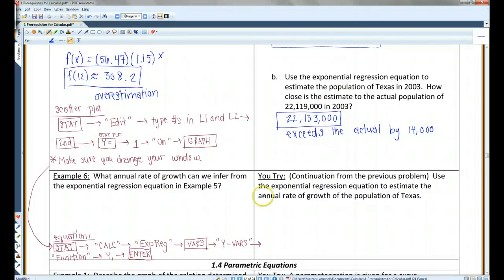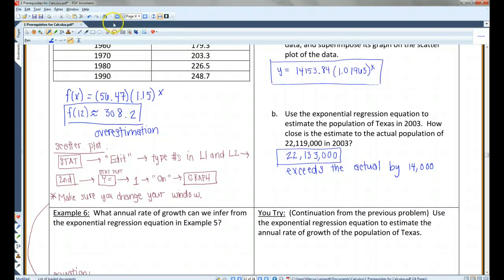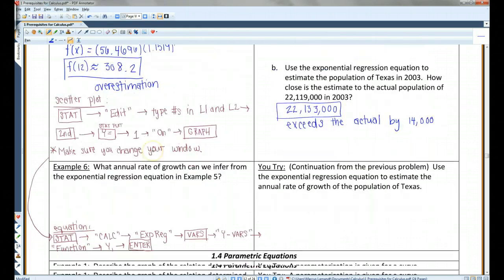All right, what annual rate of growth can we infer from the exponential regression equation in example 5? You know what, I'm actually going to go back up here. I rounded to two decimal places, but it probably is more accurate to give a few more decimal places. Let's see here. It was, oh, that was 4.6, 5, 6.4696. I have it written down in front of me. You guys can't see it. I'm not just doing this from memory, don't worry. There we go. It's a little bit more accurate.